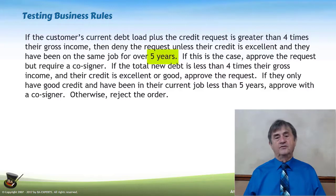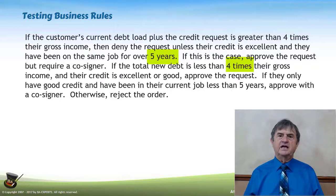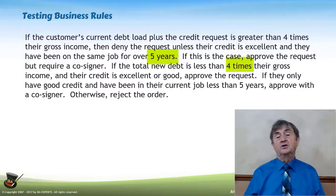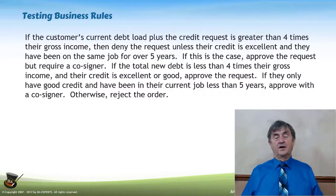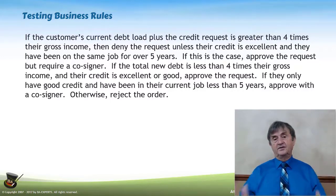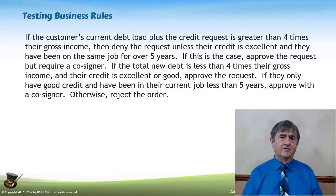Values like five years and four times gross income should not be constants — they should be variables that the business community, or somebody within the business community, has the authority to adjust as the need arises. If I'm trying to develop a test scenario to make sure a new application is taking all of these conditions properly into account, just reading the text drives me nuts. I can't see all of the different possible combinations from the text.